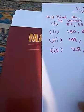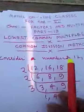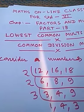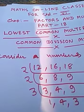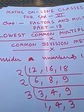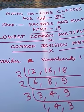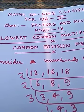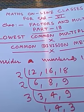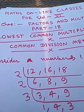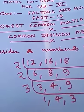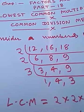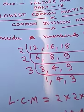In the common division method, to find the LCM of numbers, we write the numbers in a row separated by commas, then select a number which will divide at least two of them. This process is repeated, and at last the LCM equals the product of all divisors and any remaining numbers not divided by at least two.